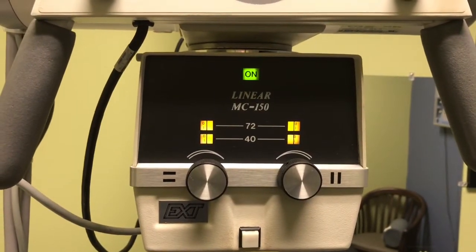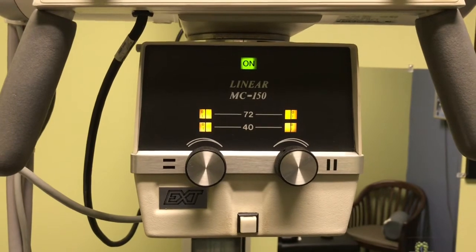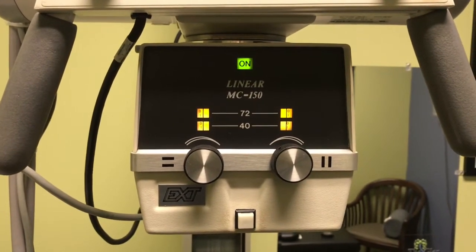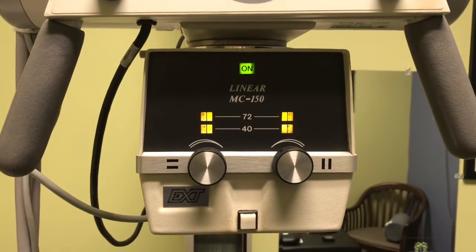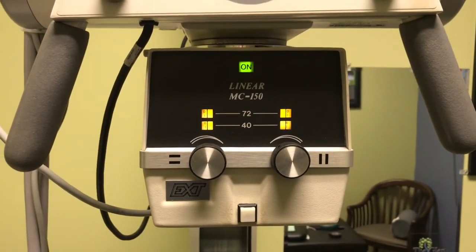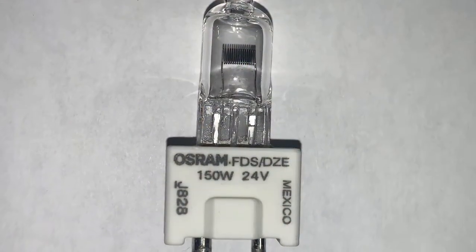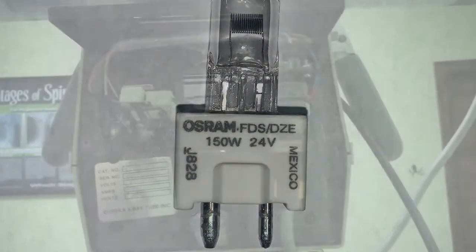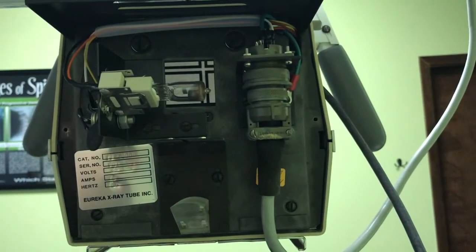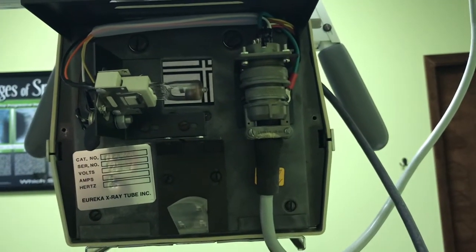This is a Lineair MC-150 collimator. It uses a DZE 150 watt 24 volt bulb. Here you can see the collimator with the back removed and you can see the bulb is accessible.